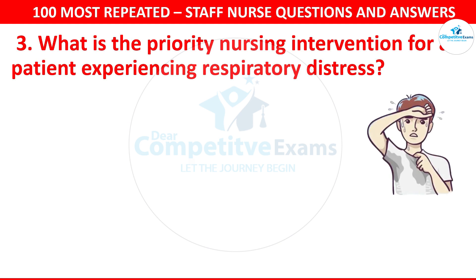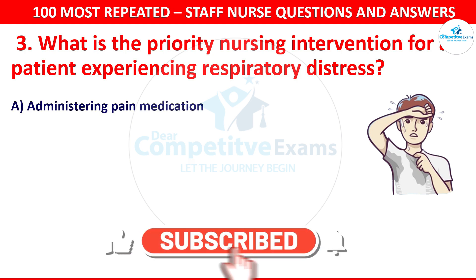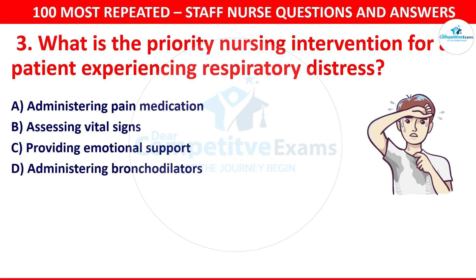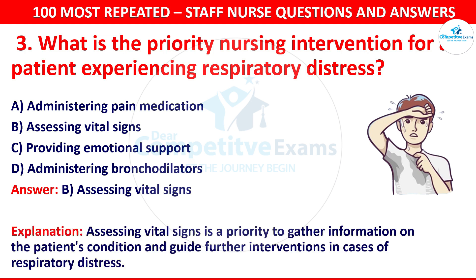Question 3. What is the priority nursing intervention for a patient experiencing respiratory distress? Your options are administering pain medication, assessing vital signs, providing emotional support or administering bronchodilators. The correct answer is assessing vital signs. Assessing vital signs is a priority to gather information on the patient's condition and guide further interventions in cases of respiratory distress.